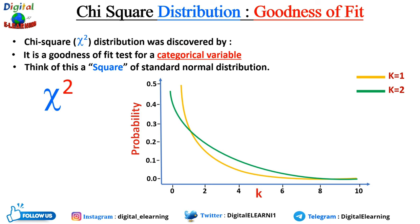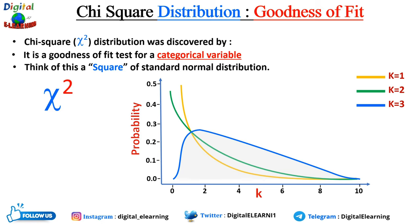When k is one or two, there is a very high probability that chi-square is close to zero. But if we increase k beyond two, say k equals three, the chi-square distribution becomes a hump shape. The curve starts very low, then increases and then decreases, meaning there is a low probability that chi-square is very close to or very far from zero.